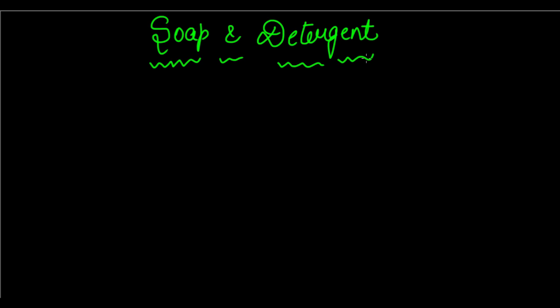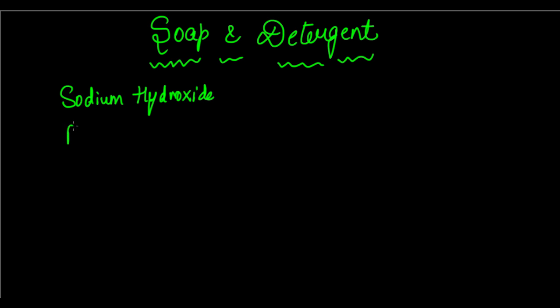Now soap is something we use every day — everyone uses soap every day. It is a very essential chemical of our daily life. We all know that soap is formed with the use of certain bases and soap is basic in nature. It is formed with the use of bases such as sodium hydroxide and potassium hydroxide. We use a lot of chemicals in the production of soap as well as detergents. Detergents are also basic in nature.